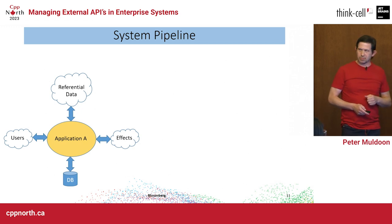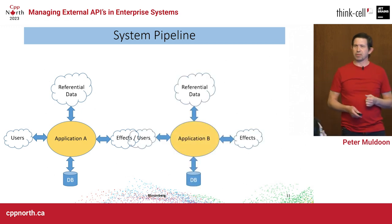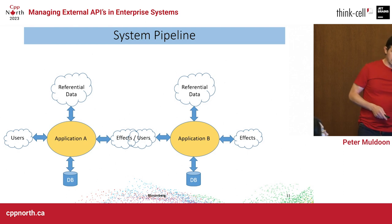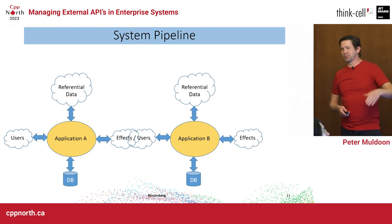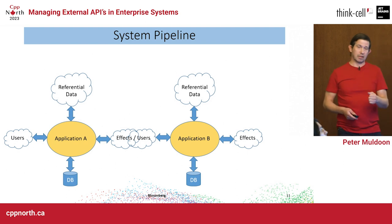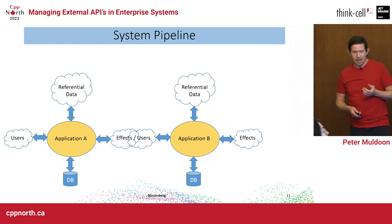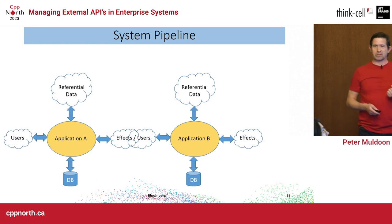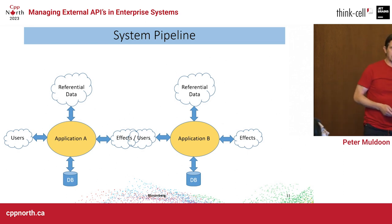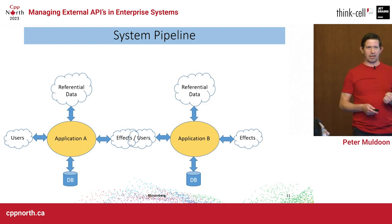These systems are generally part of a pipeline — my output is someone else's input, and my input may come from someone else's output. That means I am chained into other systems. Changes and problems arise, and I have to deal with that in a way that my system stays reliable, flexible, and maintainable.